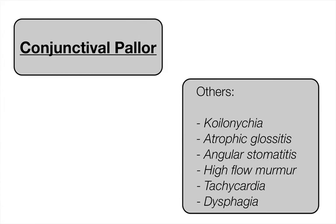In terms of signs, the most common is conjunctival pallor, though it is not recommended to exclude anemia based on the absence of this sign. Other signs associated with certain types of anemia include koilonychia (spoon-shaped nails), atrophic glossitis (red, large, swollen tongue), angular stomatitis (fissuring at the corners of the mouth), features of a hyperdynamic circulation such as a high-flow murmur or tachycardia, and very rarely dysphagia due to a pharyngeal web.